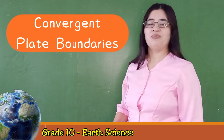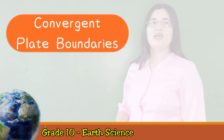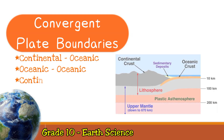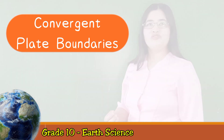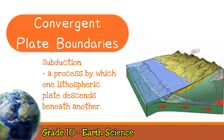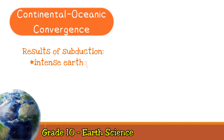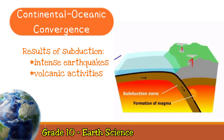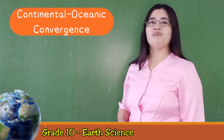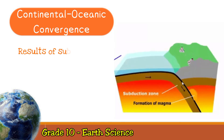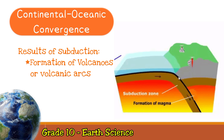Let us first investigate a convergent plate boundary. Convergence can occur between a continental and oceanic plate, between two oceanic plates, or between two continental plates. A convergent plate boundary has a subduction zone. Subduction is a process by which one tectonic plate descends beneath another. When a continental and oceanic crust converge, subduction occurs, resulting in intense earthquakes and volcanic eruptions due to the movements of crust and magma, and the formation of volcanoes or a volcanic arc.